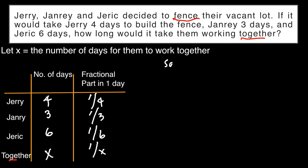So let's have the solution. If we add the fractional part that they can do in one day — one-fourth for Jerry, one-third for Janre, and one-sixth for Jeric — that will be equated to the fractional part that they can do in one day if they work together, which is 1 over x. So we now have the equation and are ready to solve for x.